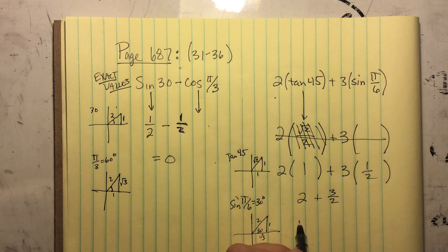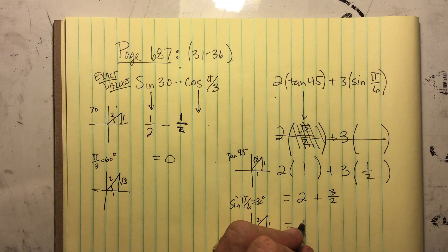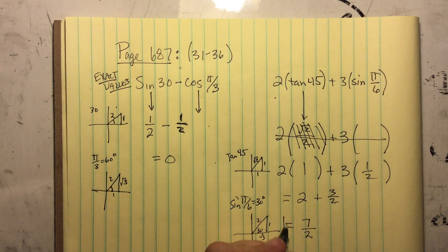And again, let's do our little trick for fractions. 2 times 2 is 4. 4 plus 3 is 7. 7 over 2. That is my answer.